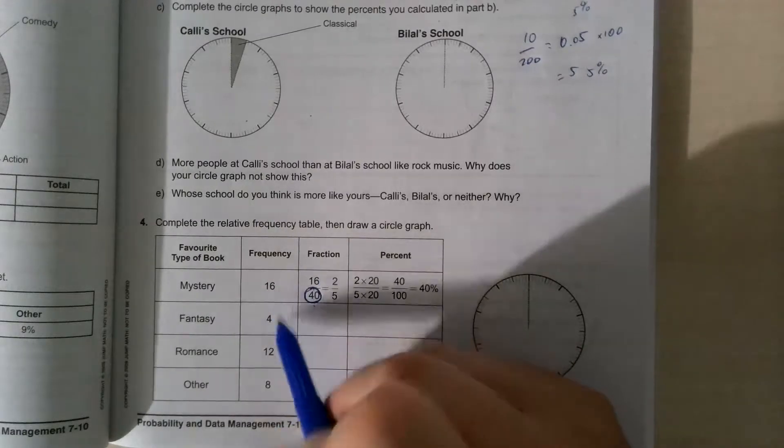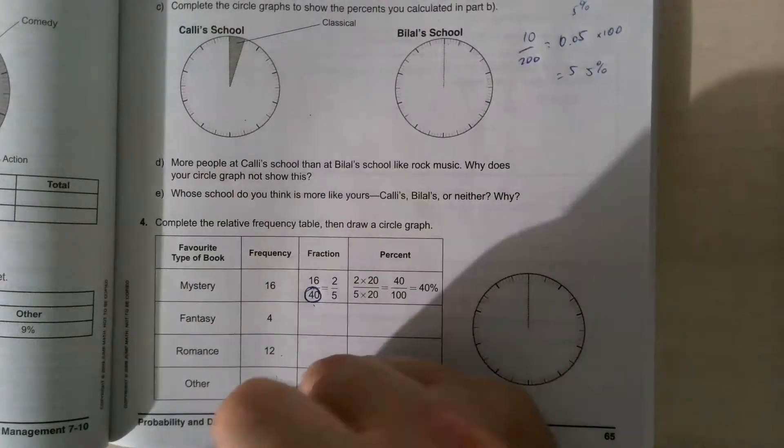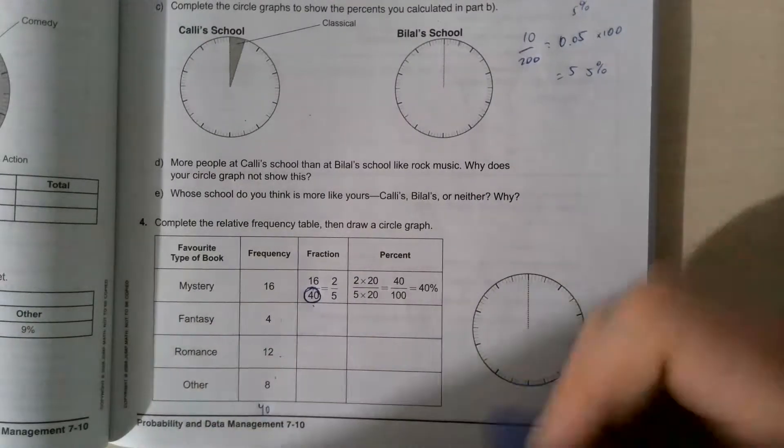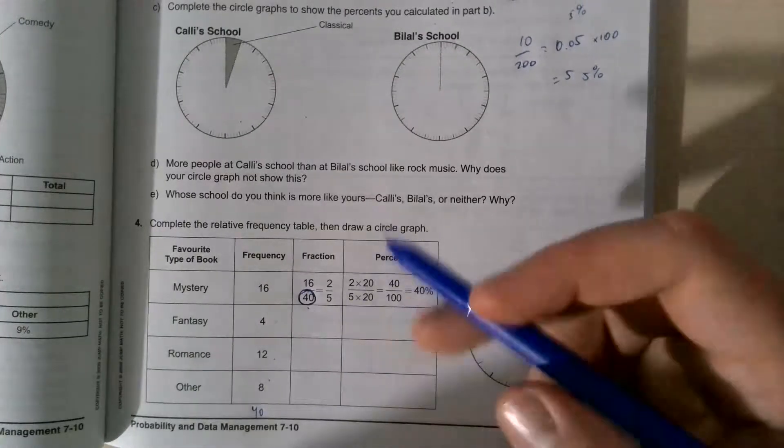So we have 16 plus 4, that's 20, plus 12 is 32, plus 8 is 40. So altogether, there were 40 people that are asked. And now we can actually start figuring out, let's go from here and see how to do this.